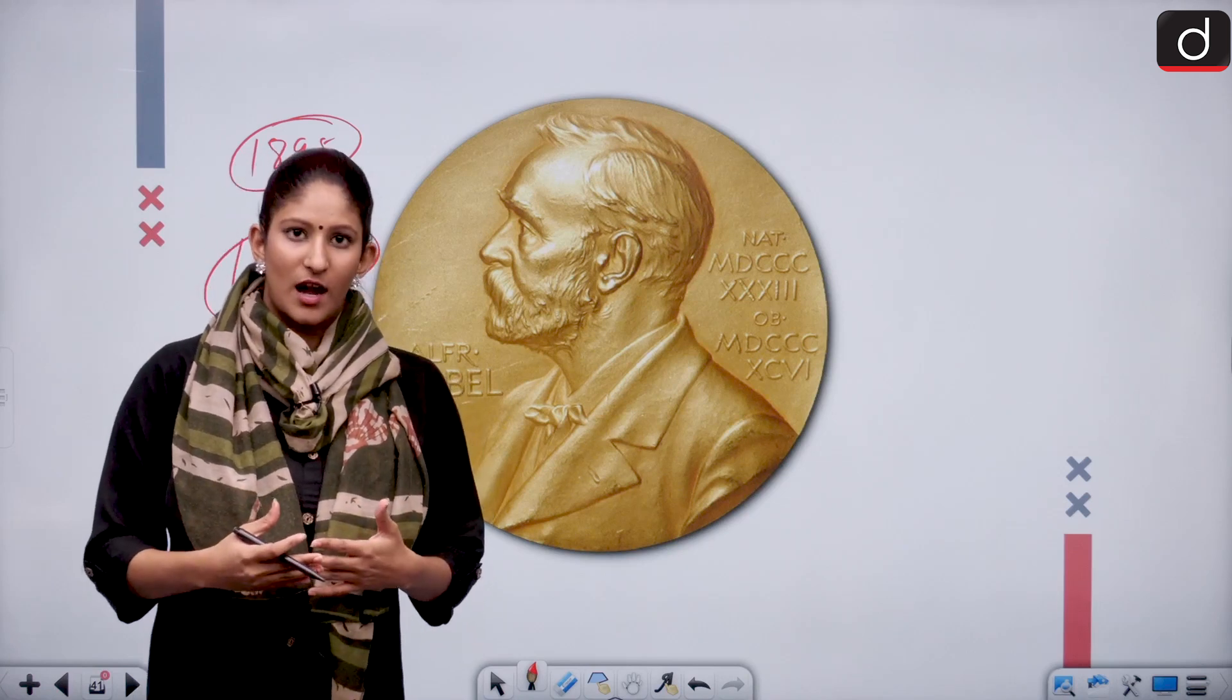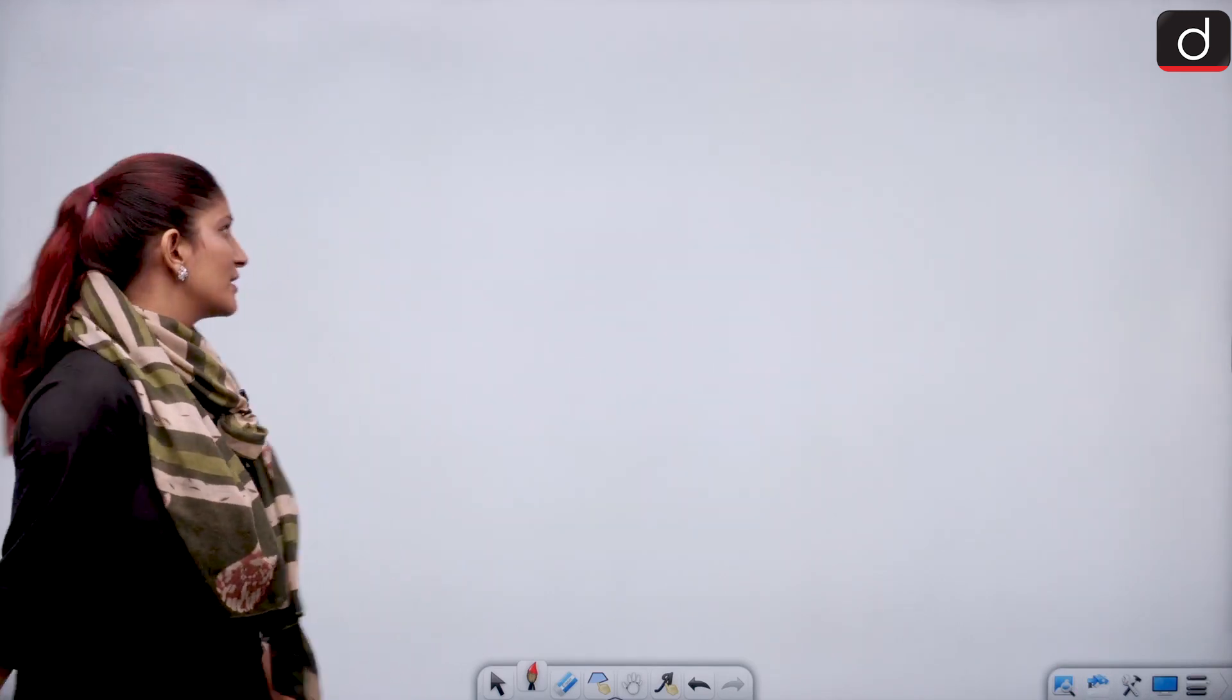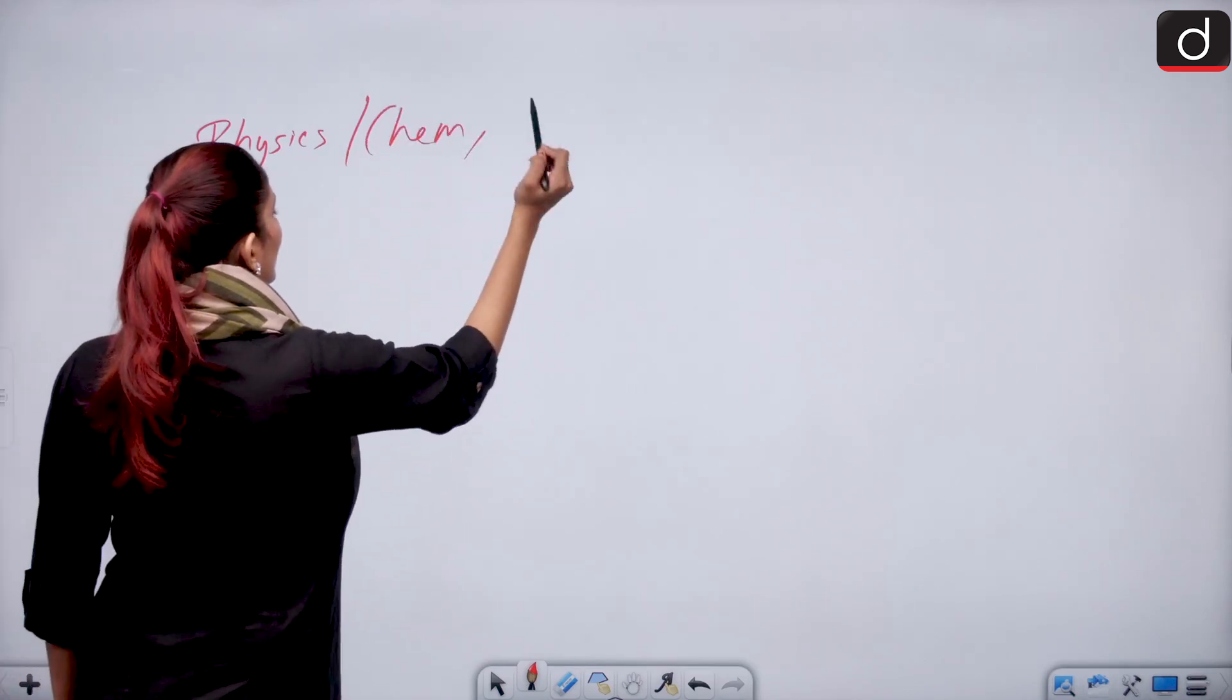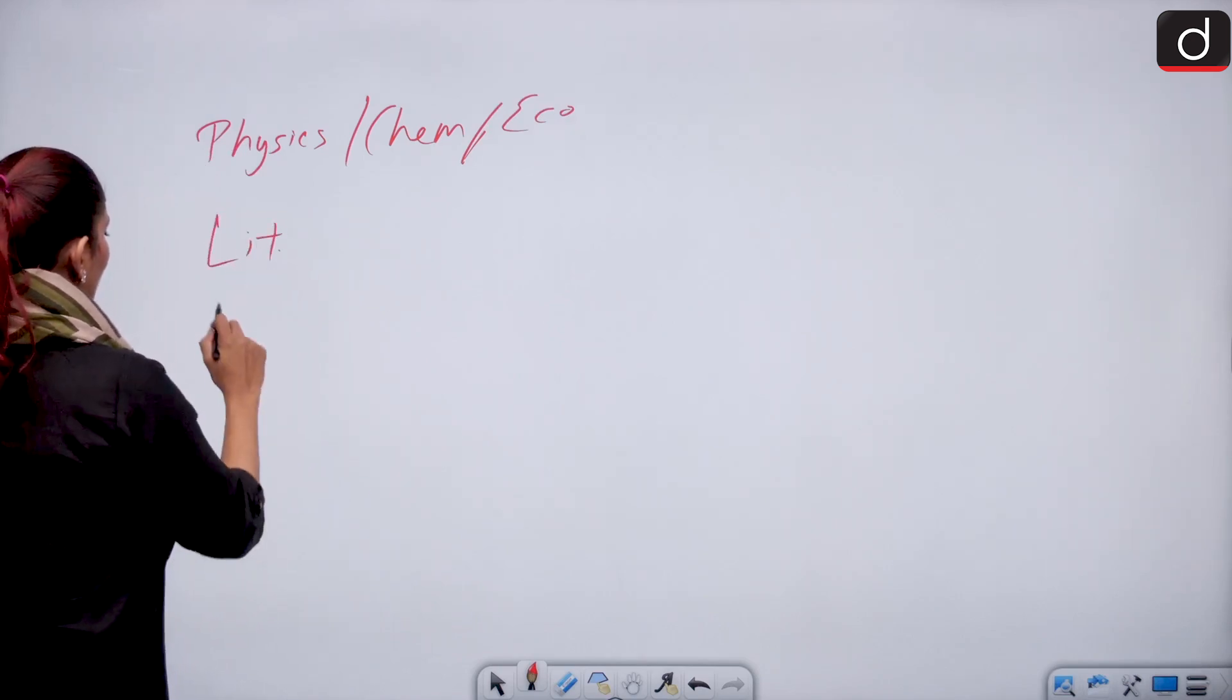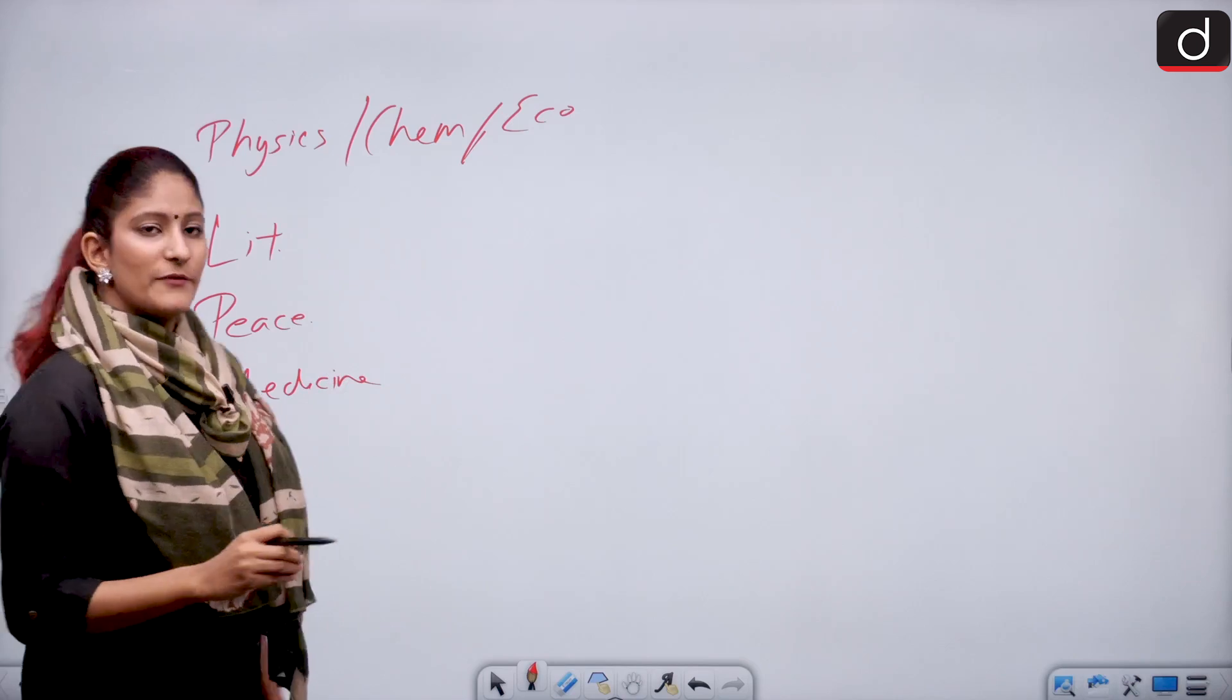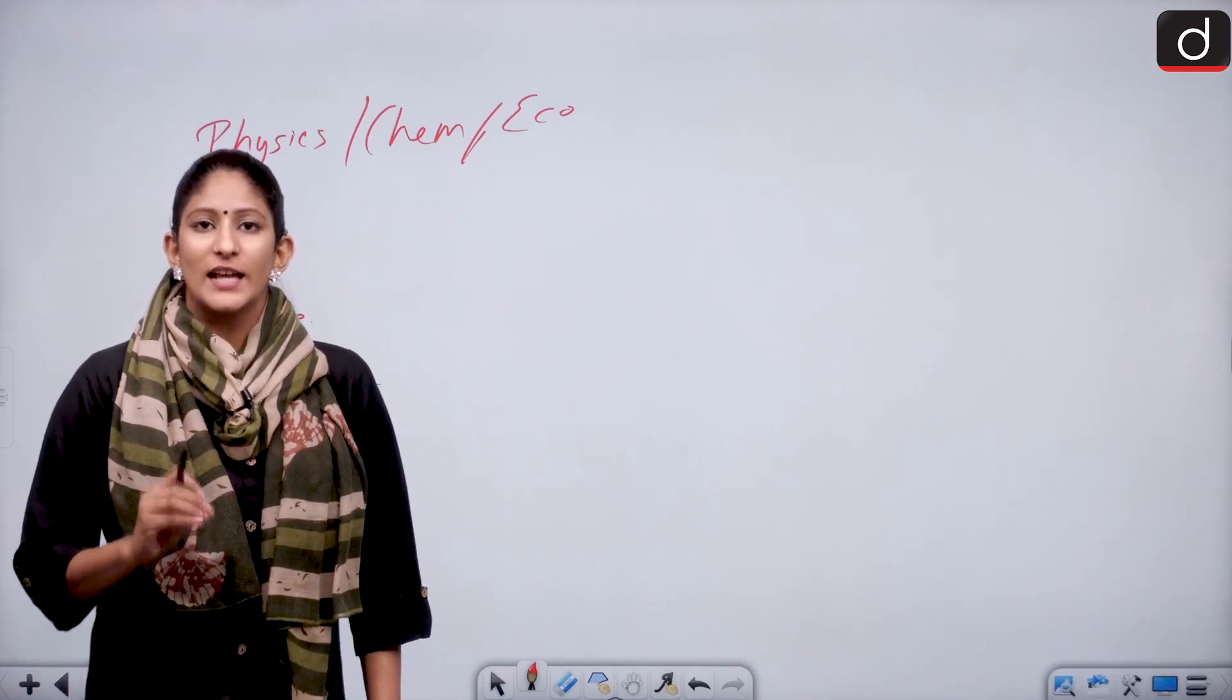There are certain institutes that select Nobel Prize laureates. Let's talk about how a Nobel Prize laureate gets selected. There are different institutes for physics, chemistry, economics, literature, peace, and medicine or physiology.